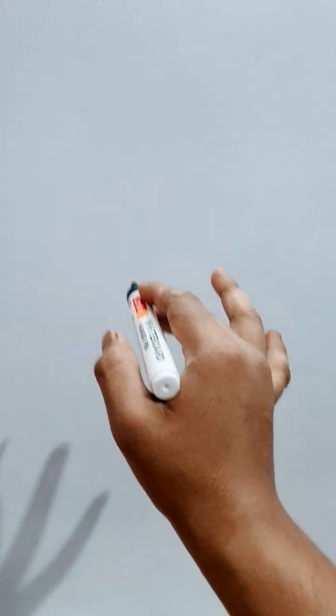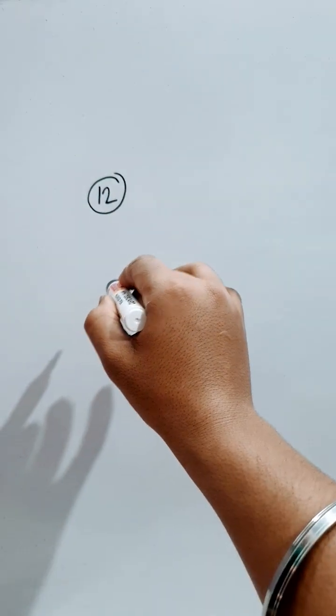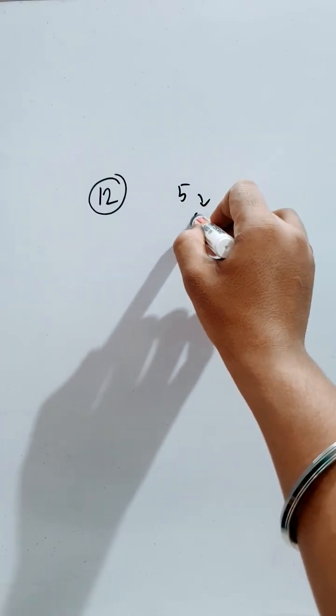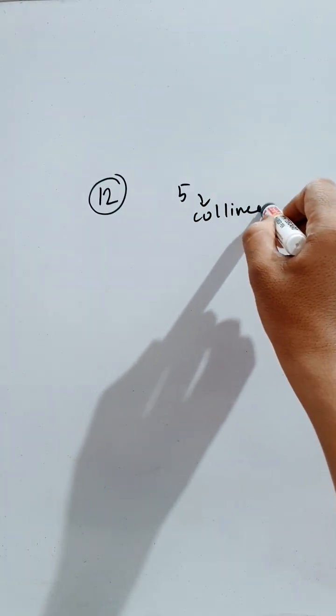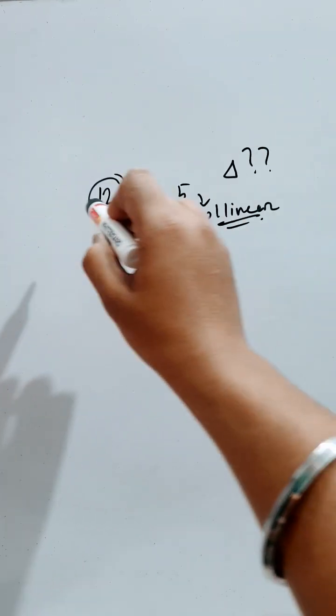Hello students, welcome to Mr. Donko Shorts. Today our question is: 12 points are given to us, of them 5 are collinear. Then how many triangles can be formed using these points?